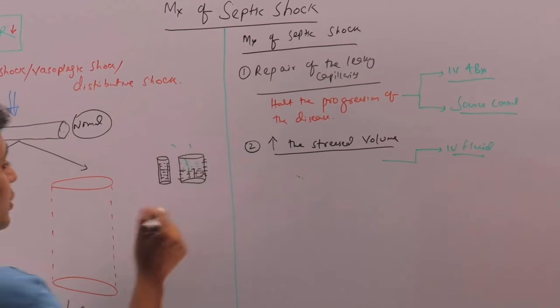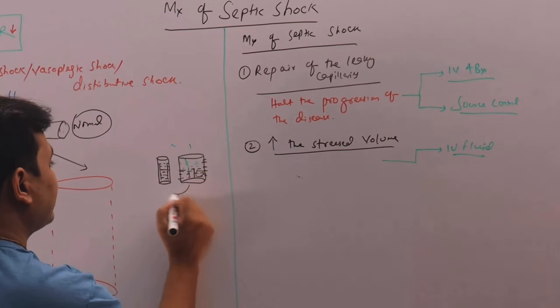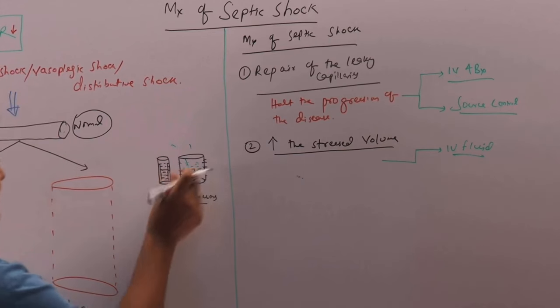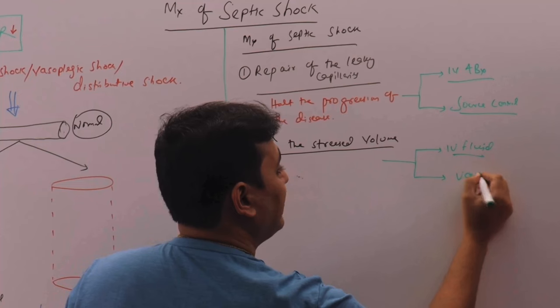This is one way. Another way is what we are going to do, we can constrict the vessels to again become like this. We can use vasopressors to constrict it. The second line will be vasopressors.